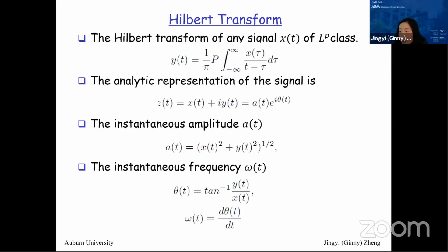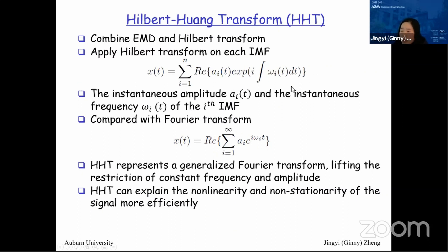Once we have the IMFs, we apply the Hilbert transform on each sub-signal instead of the raw signal. Using the Hilbert transform, we obtain instantaneous frequency and amplitude. This representation can be viewed as a generalized Fourier transform where, unlike Fourier transform (with constant frequency and amplitude), HHT has instantaneous frequency and amplitude as functions of time. That is why HHT can capture the non-linearity and non-stationarity of signals more efficiently and flexibly.